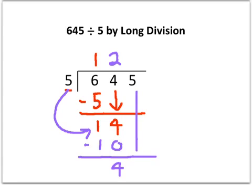And we bring down the 5. And then final sum. We say to ourselves, how many fives go into 45? Which is 9.